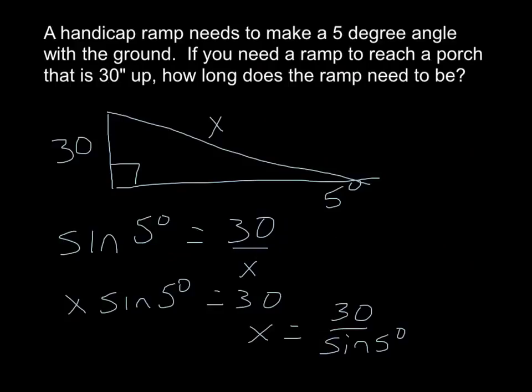So when you cross multiply, you get x times sine 5 equals 30, then divide by sine 5 degrees. So you get x equals 30 divided by sine 5 degrees, and you come up with, your ramp needs to be 344.2, 344 inches long. If you want to know how many feet that is, divide by something, right?